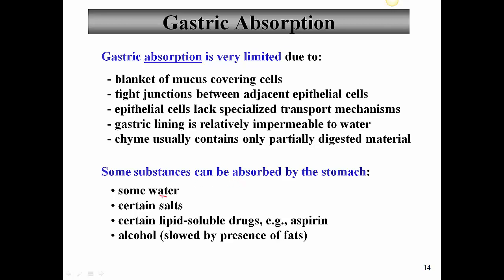However, there are some substances that can be absorbed by the stomach: some water, some salts, and certain lipid-soluble drugs like aspirin and ibuprofen. Those NSAIDs can actually erode away the mucus lining and eventually cause stomach ulcers. Alcohol can also be absorbed through the stomach lining — if you have a drink on an empty stomach, it seems to go to your head faster, partly because alcohol is directly absorbed through the stomach lining, though this can be slowed by the presence of food or fats. That finishes off our lecture on the stomach and stomach control. I'll see you next time for part four of lectures nine and ten.